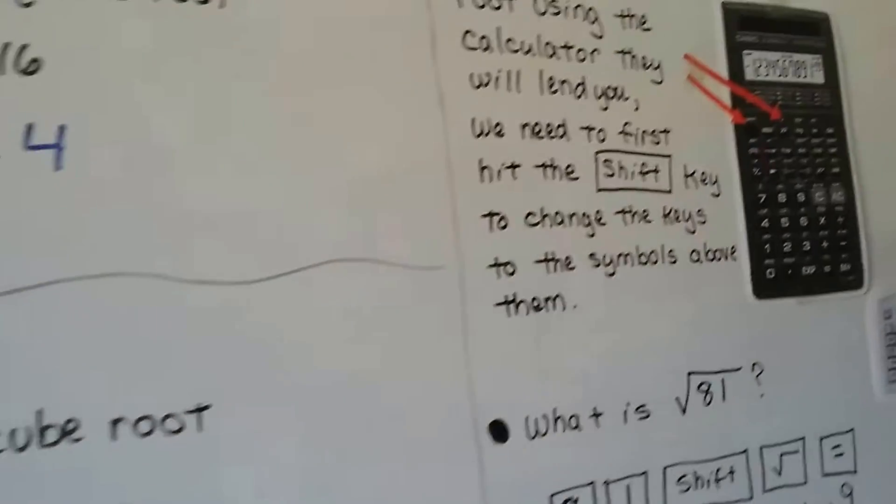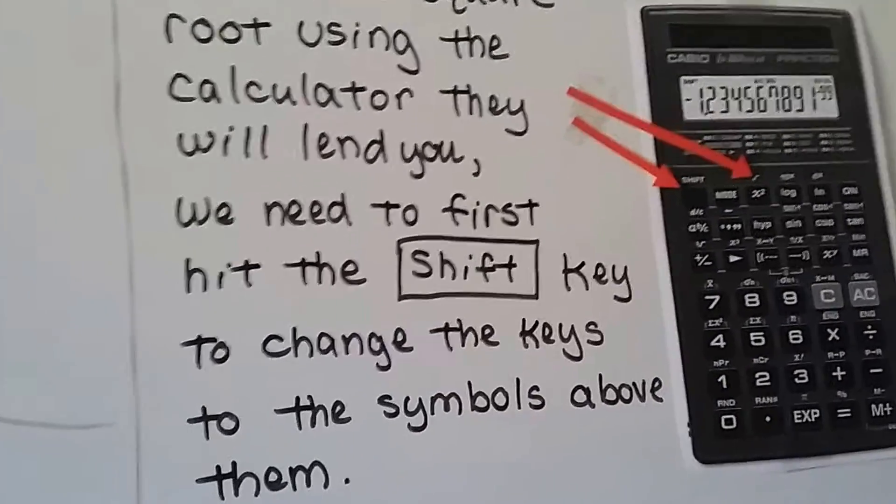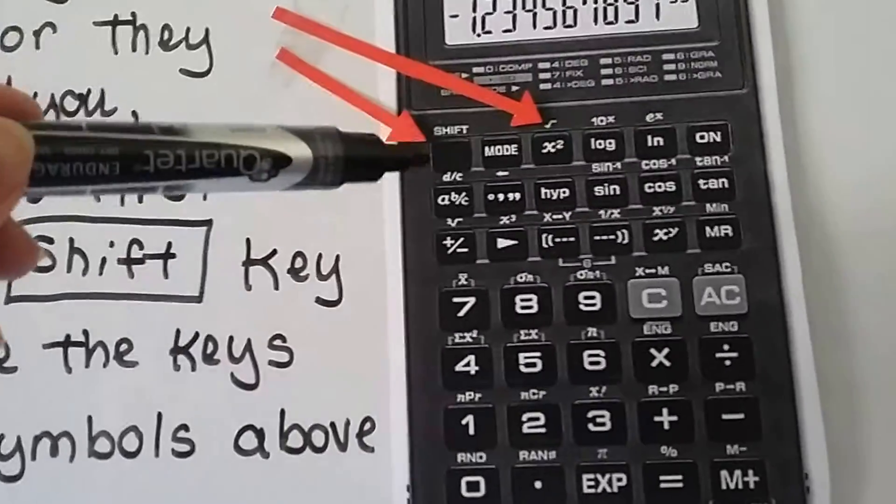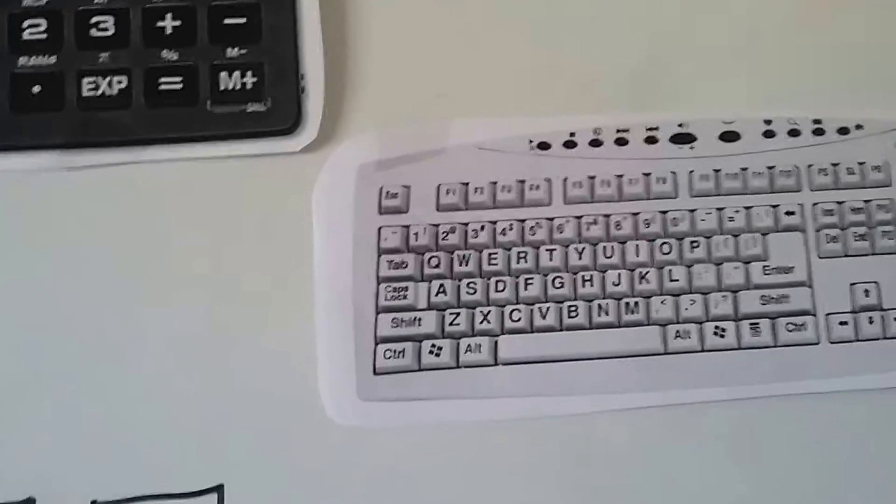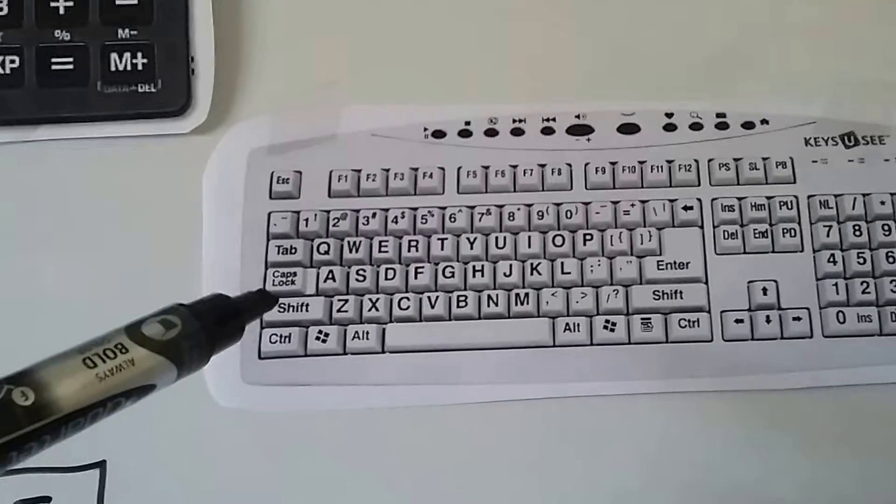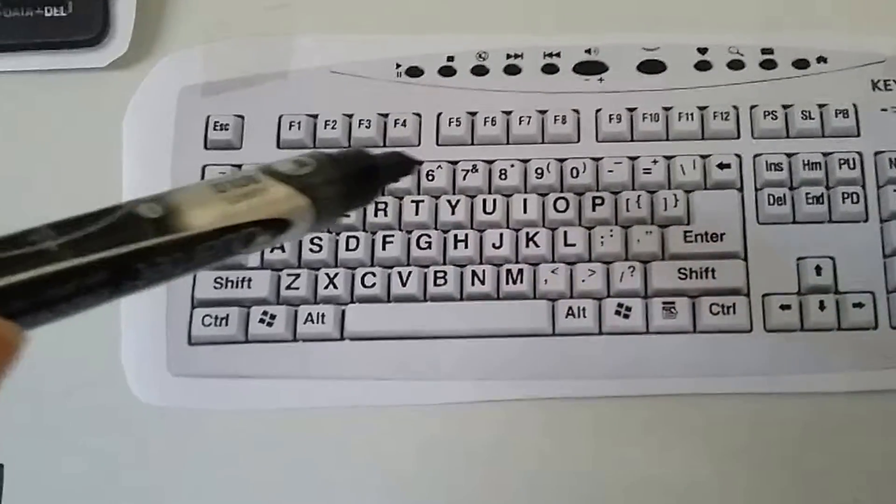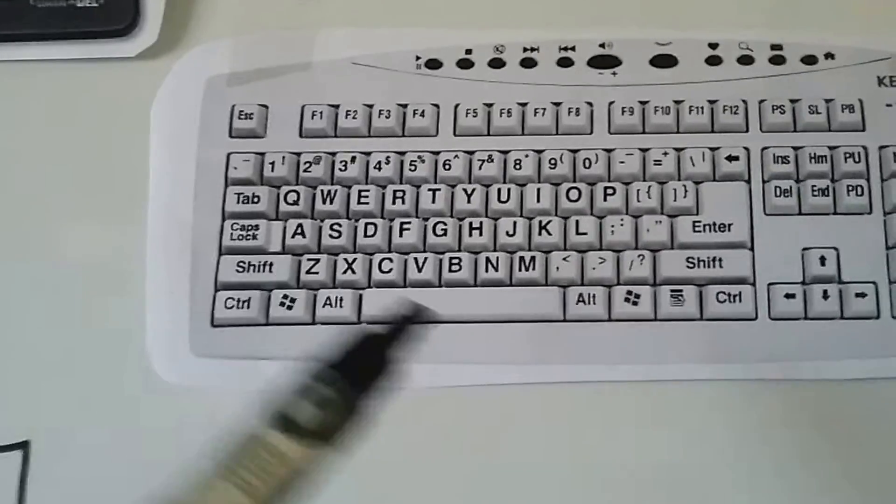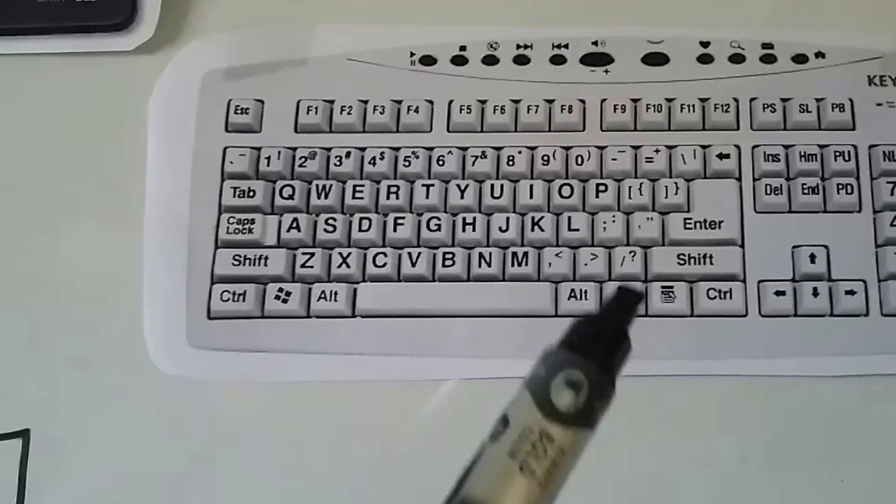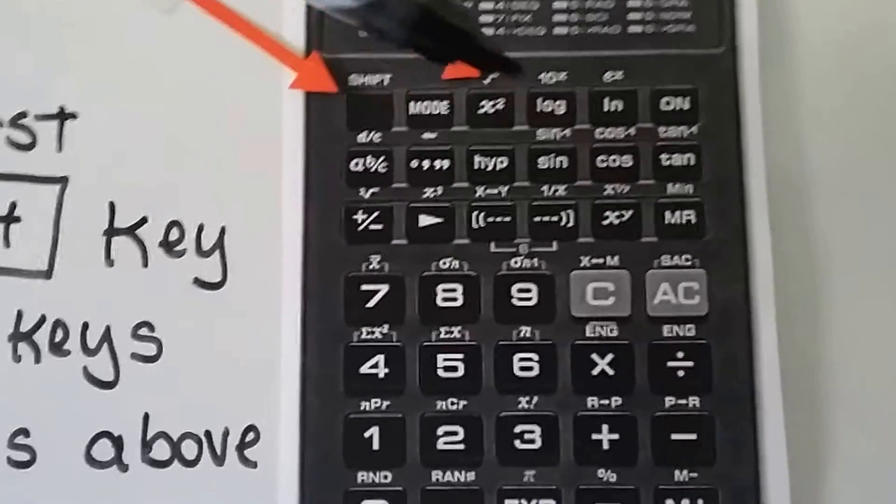So, to find a square root using the calculator that they're going to lend you, we first need to hit the Shift key. So, if you look at this calculator, you'll see a Shift key right here. And this Shift key is the same thing as on your typewriter or your computer. So, when you hit this Shift key, you know that it's going to let you type these numbers or symbols above the numbers here. You can hit the Shift key to get the quotation marks or a question mark. Well, the same thing with the calculator. You hit that Shift key, and that's what gets you to all these symbols above the key.